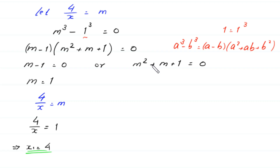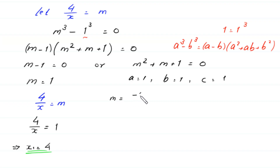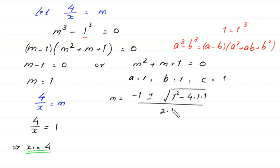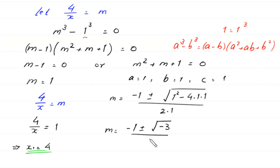Now, to find the other two values, we solve the quadratic equation m squared plus m plus 1 equals 0. This is not factorable, so we solve it by the quadratic formula. In this equation, a equals 1, b equals 1, and c equals 1. According to the quadratic formula, m equals minus b plus or minus square root of b squared minus 4ac, divided by 2a.